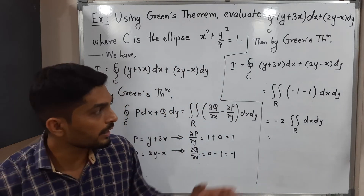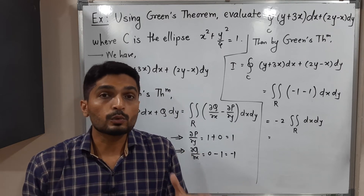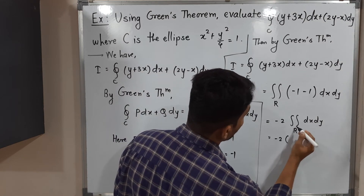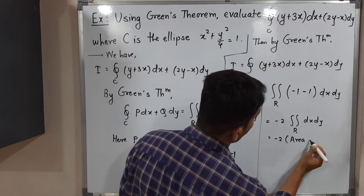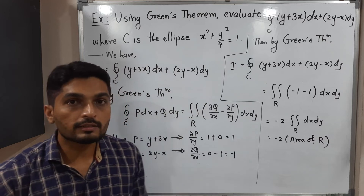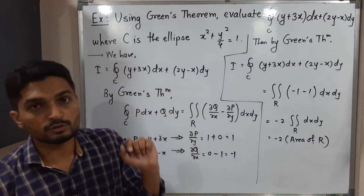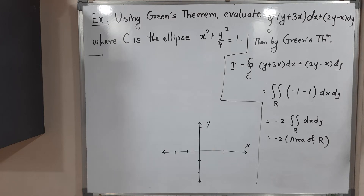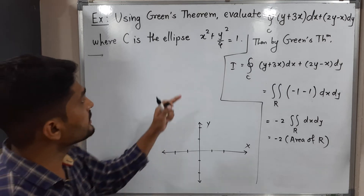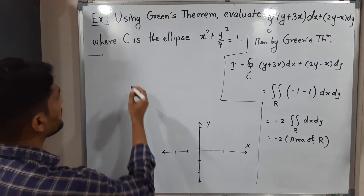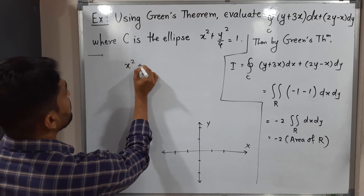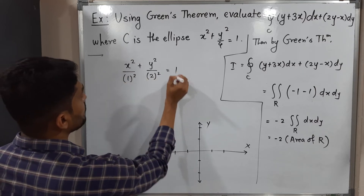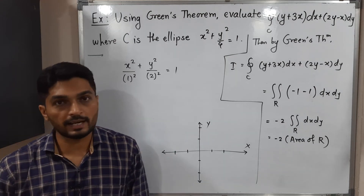When we have a double integral of simply dx dy with no function, it gives the area of region R. So I = −2 × Area of R, where R is the region bounded by the closed curve C. Here C is the ellipse x² + y²/4 = 1, which we can rewrite as x²/1² + y²/2² = 1, expressing it in standard form.